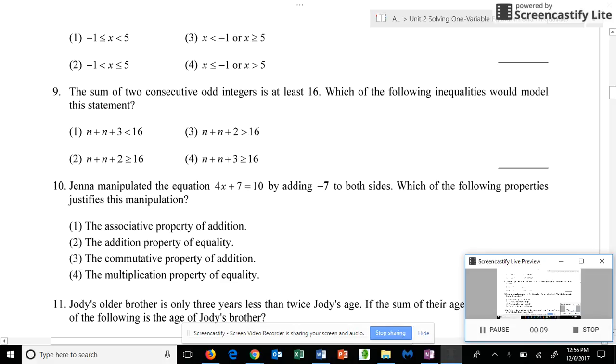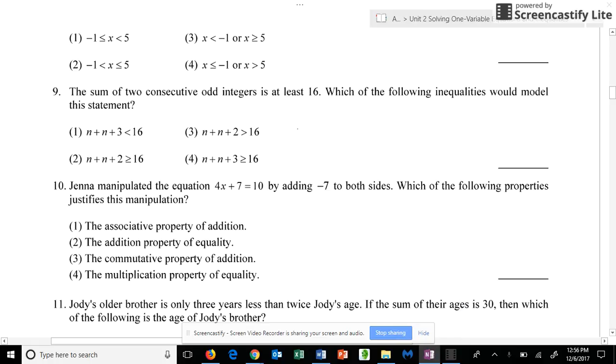So first we're dealing with an unknown number. Let's call that number n. And we are finding the sum, which means we are adding to that the next consecutive odd integer.